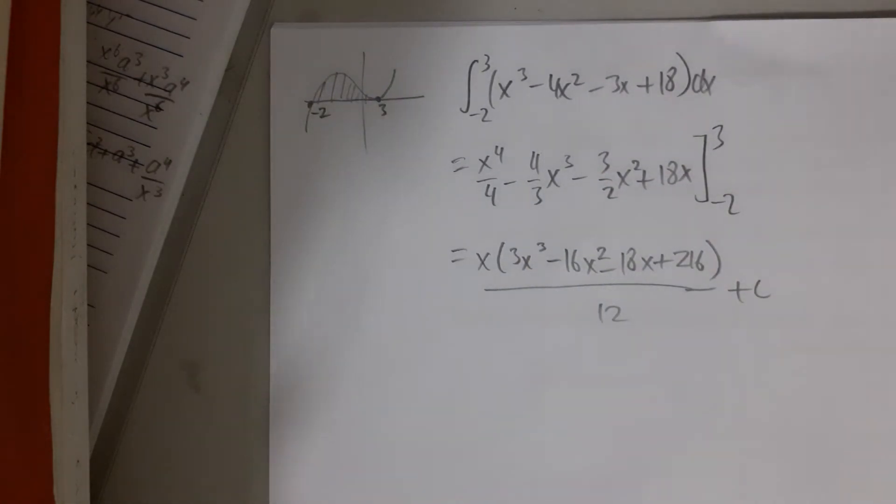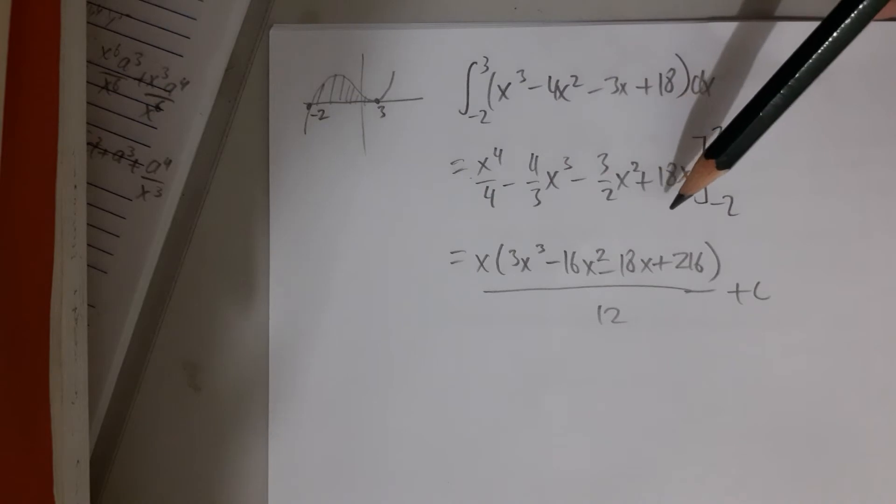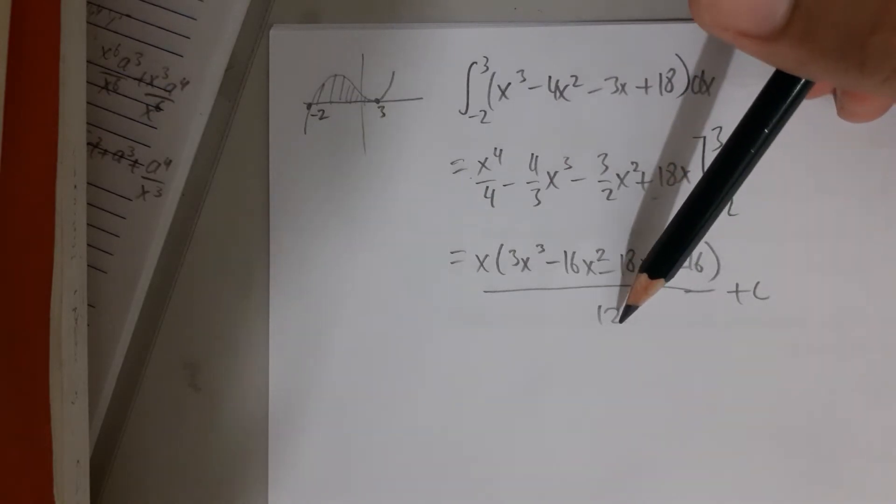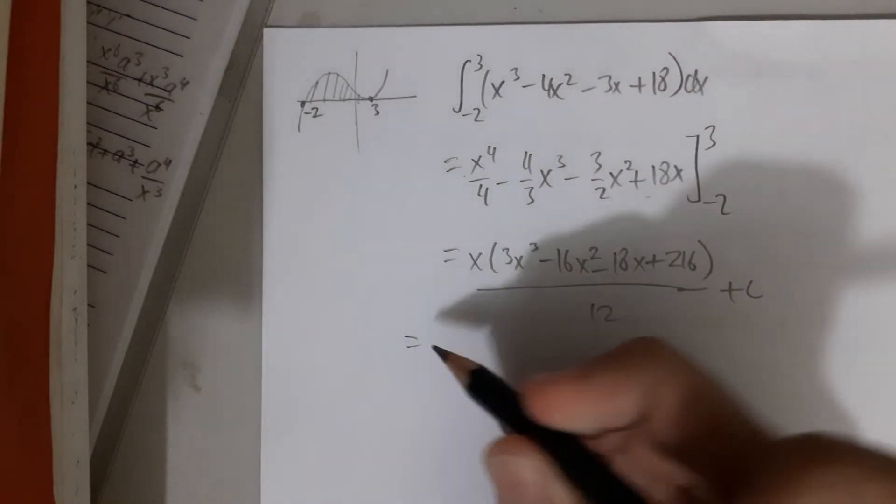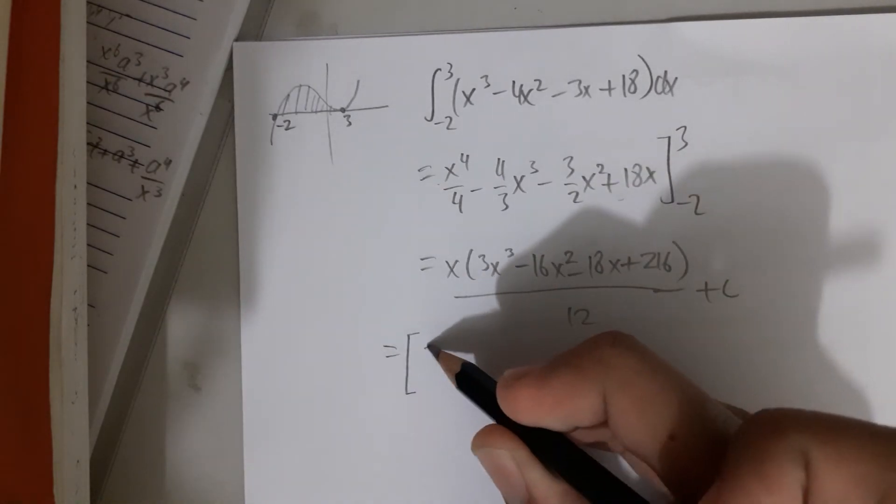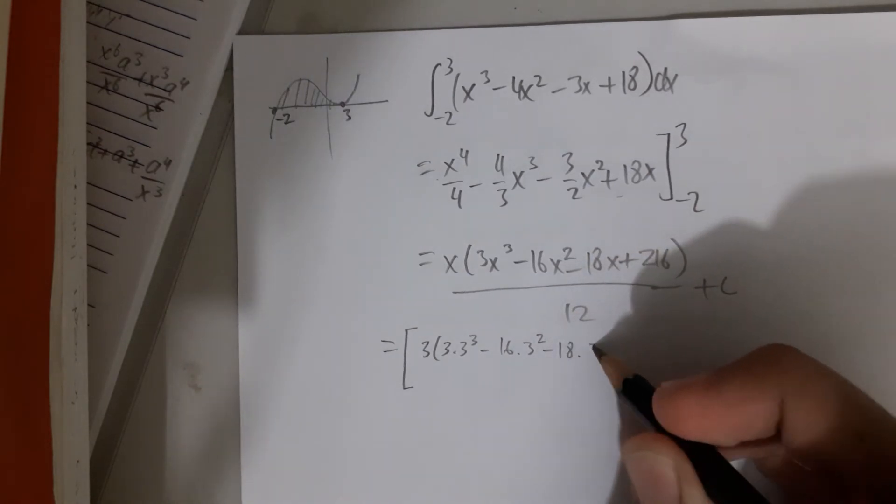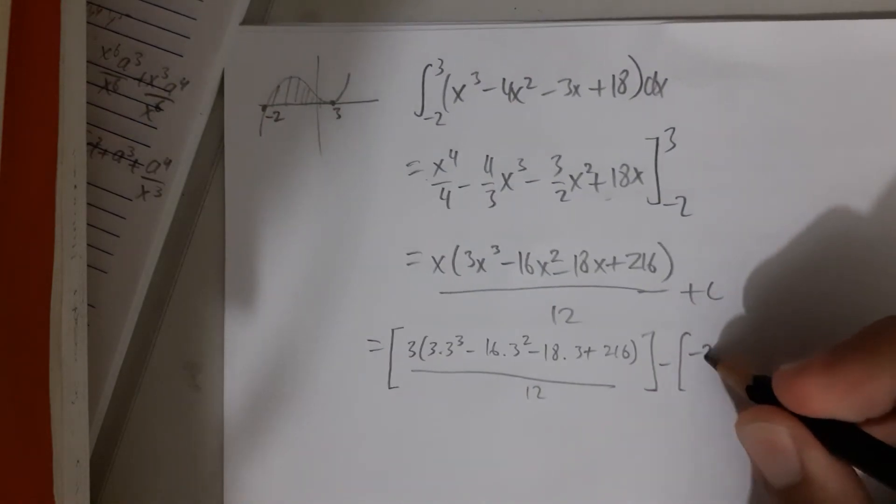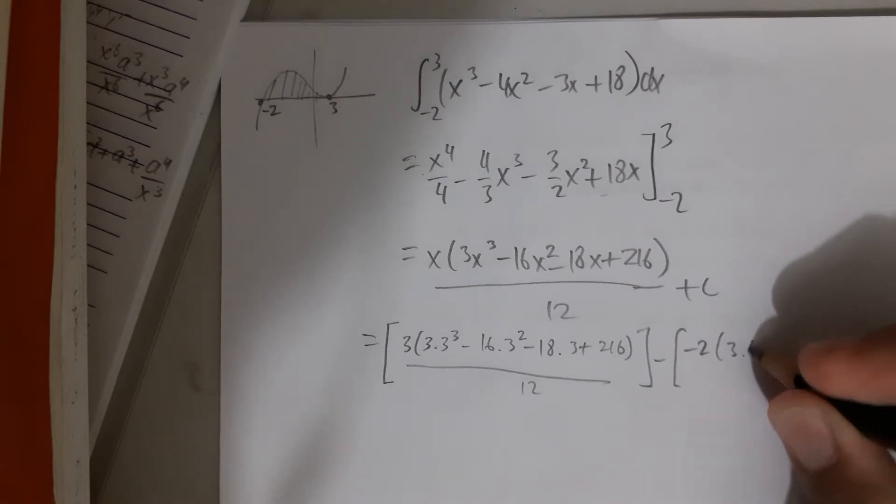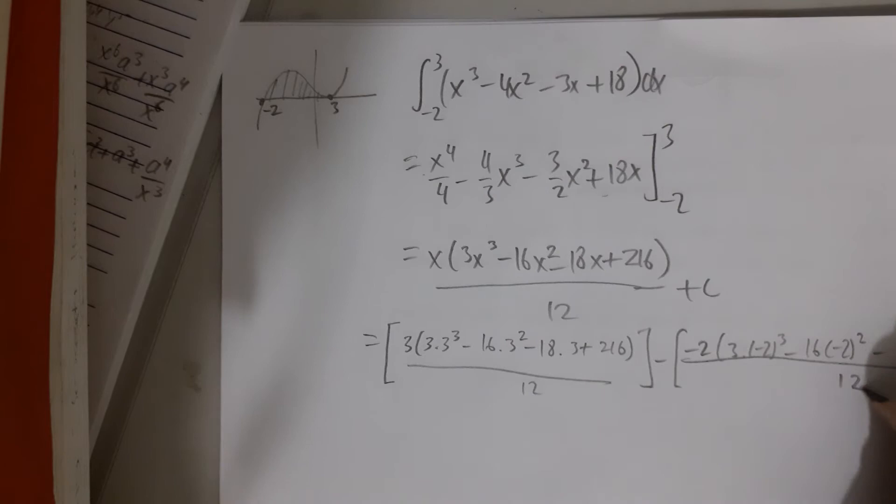So it becomes (3x³ - 16x² - 18x + 216)/12. What I do here is to actually take out x and then equalize the denominator so it can be equal to 12. This way, 3 and minus 2 can be inserted easily. So by further calculation, let's put 3 first: 3(3³) minus 16(3²) minus 18 times 3 plus 216 over 12. And we put minus 2: minus 2 times [3(-2)³ minus 16(-2)² minus 18(-2) plus 216]. All of this divided by 12.